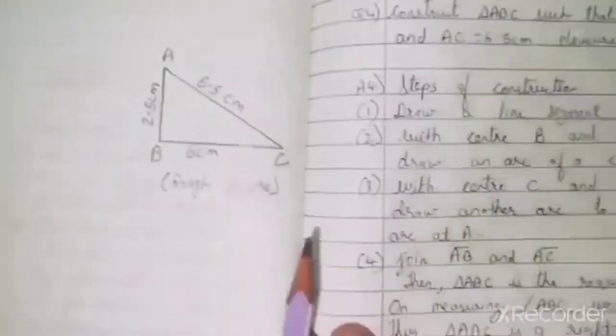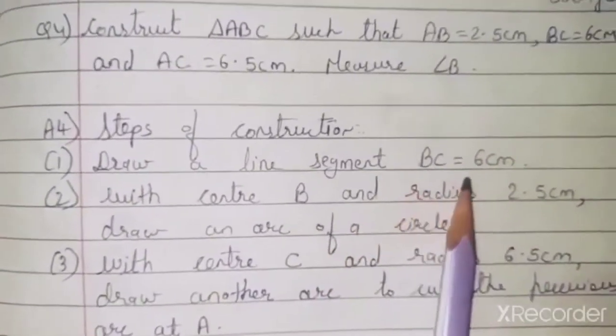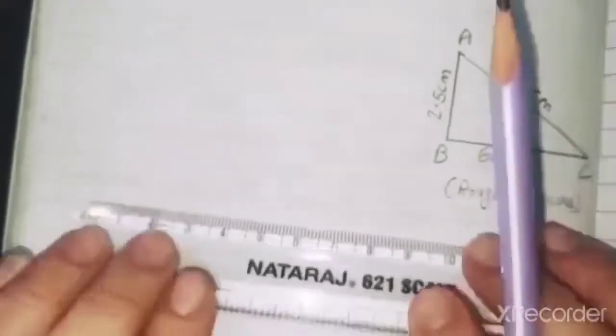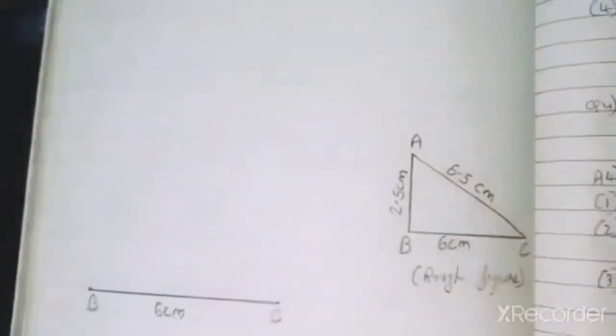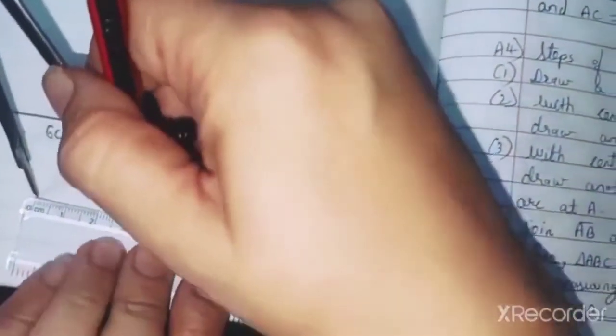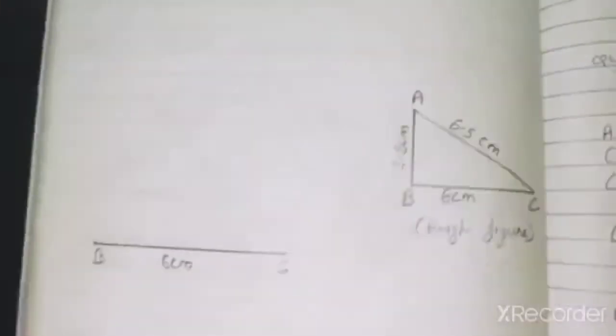Steps of construction. Step 1: Draw a line segment BC equal to 6 cm. Step 2: With center B and radius 2.5 cm, draw an arc of a circle. Mark exactly 2.5 cm on the scale, place the compass on B, and draw an arc.